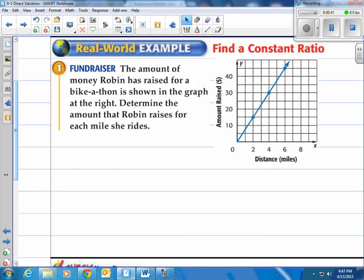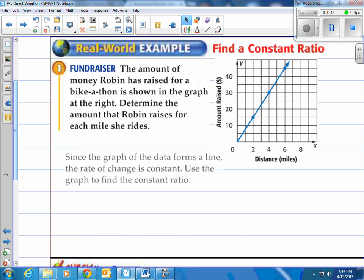Look at the graph you see a couple points on there. Since the graph of the data forms a line, the rate of change is constant. Use the graph to find the constant ratio.